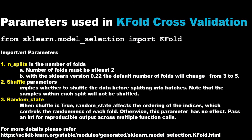There are three parameters used in KFold cross-validation: number of splits, shuffle, and random state. The number of splits is the number of folds, which should be at least 2, and from sklearn version 0.20 the default number of folds changed from 3 to 5. The shuffle parameter defaults to false; if you want to do an experiment, you can make it true. For more details on cross-validation, please visit the scikit-learn page — I have given the link here.